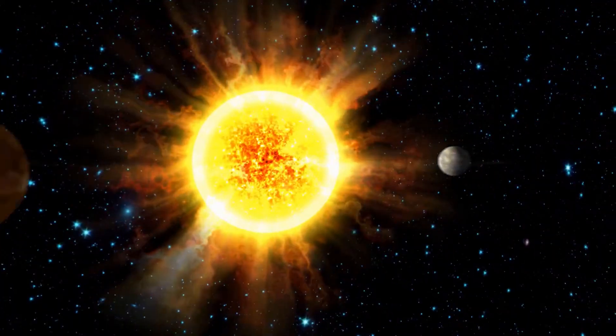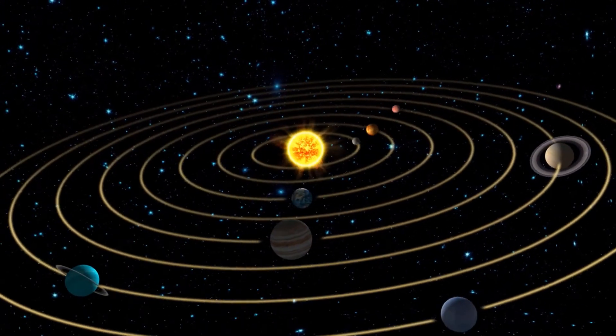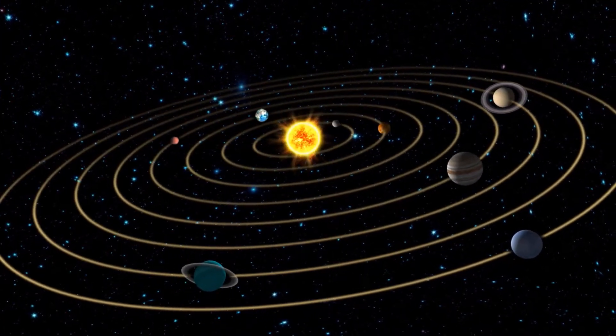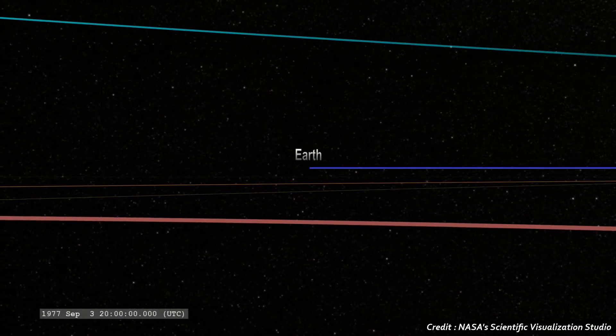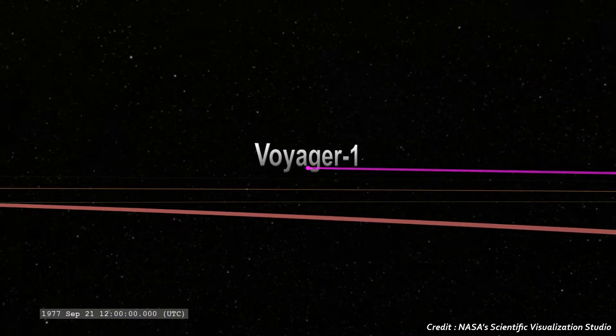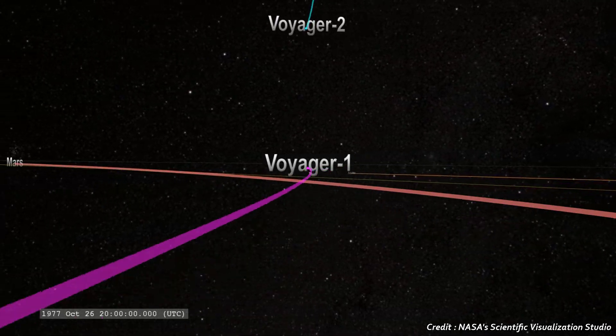The main objective of the Voyager interstellar mission was to extend NASA's exploration beyond the neighborhood of outer planets to the outer limits of our solar system. Voyager 2 was launched on August 20, 1977, from the Kennedy Space Center and Voyager 1 followed 16 days later.